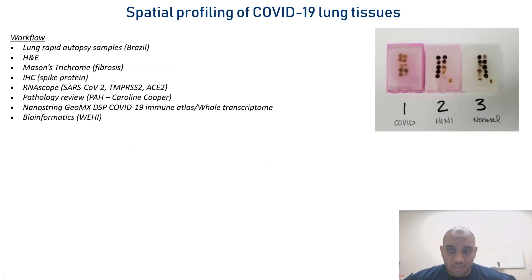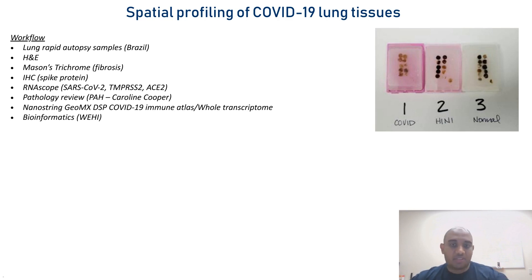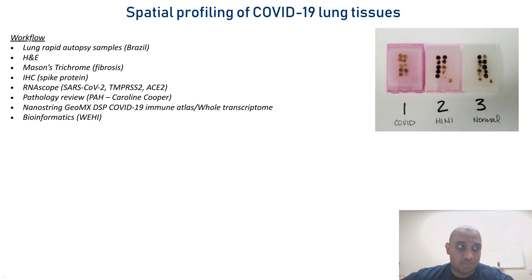Through extensive collaboration with Curitiba in Brazil, we had access to COVID-19 lung autopsy samples prepared into a tissue microarray block — 10 patient samples in the COVID-19 block, 10 H1N1 from the 2009 pandemic, and thermal non-viral death control samples. We H&E stained these, ran Mason's Trichrome for fibrosis, IHC for the spike protein, RNA scope for the virus, TMPRSS2, and ACE2. At the time, around August 2020, we didn't have any cases in Australia, but pathologists collaborated to characterize these tissues even without having seen COVID-19 autopsy samples.